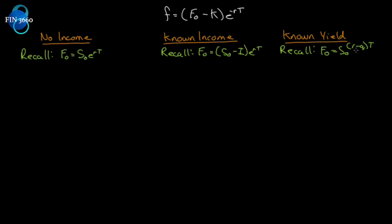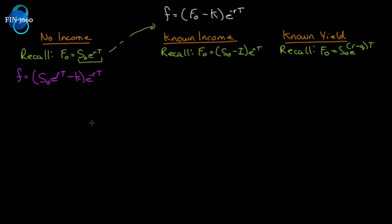And for known yield it is S₀e^((r-q)T). All we have to do for our F₀ is substitute that term in for each scenario. So our value f at this point will equal — substituting for F₀ — S₀e^(rT) minus Ke^(-rT), and we expand those terms.